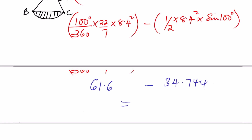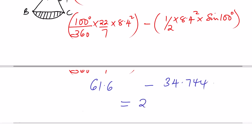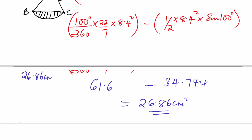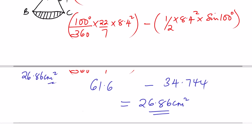Subtracting gives 61.6 minus 34.744 equals 26.86 cm². So the area of the minor segment is 26.86 centimeters squared. That is how you solve this question.